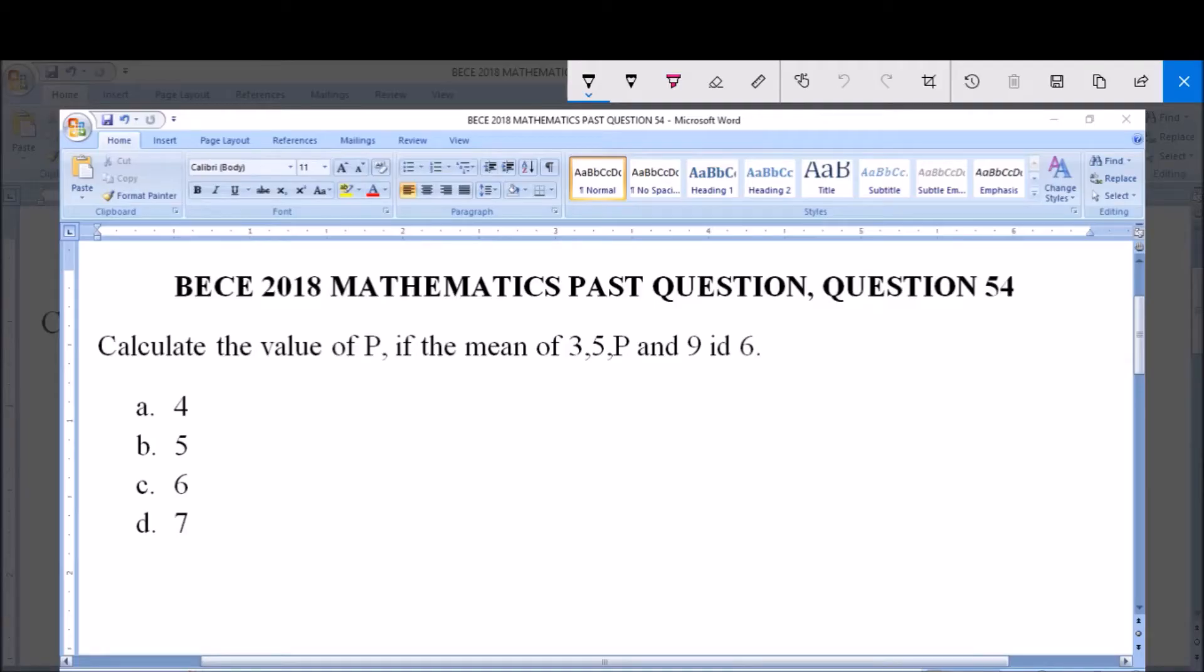Good day and welcome. Today we're going to be dealing with BECE 2018 mathematics past question, question 54. Calculate the value of P if the mean of 3, 5, P and 9 is 6. The options are: a) 4, b) 5, c) 6, and d) 7. Now we are given the following set of numbers: 3, 5, P which is an unknown, and 9.